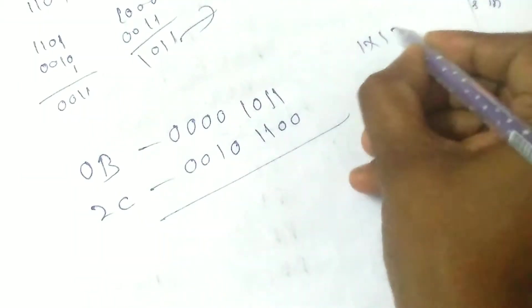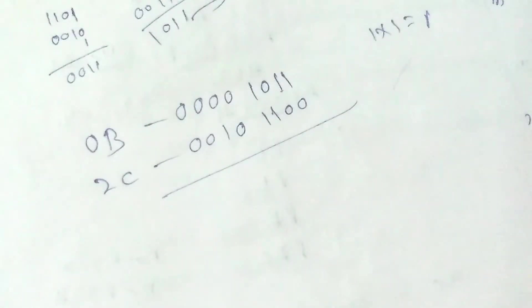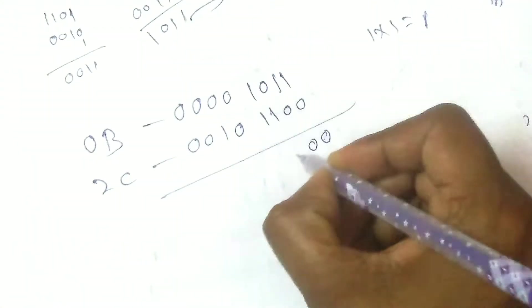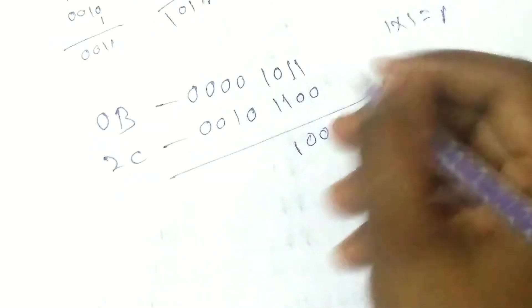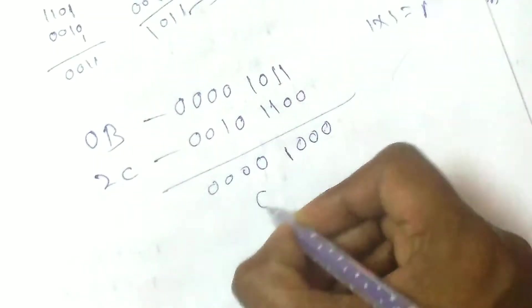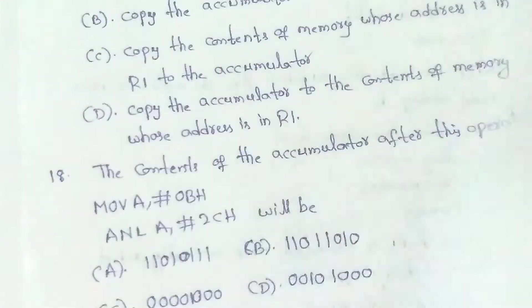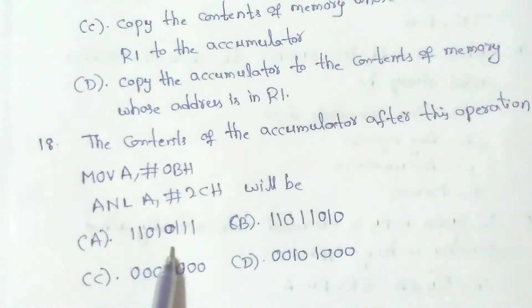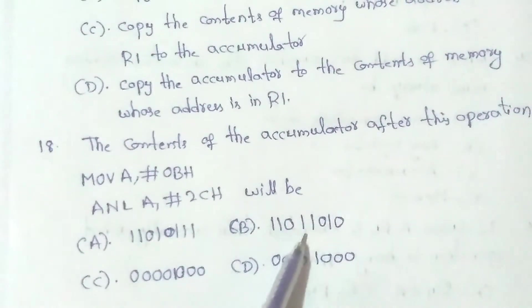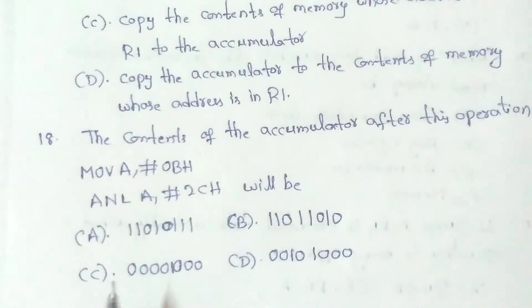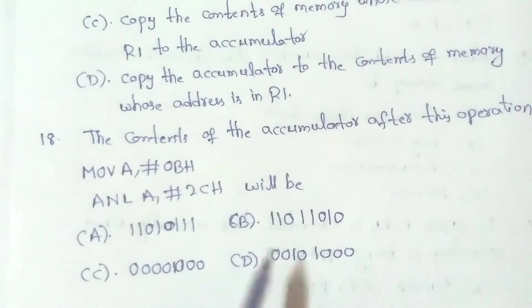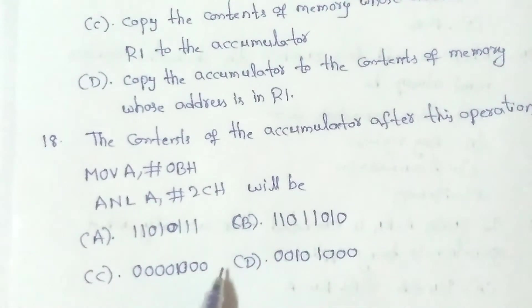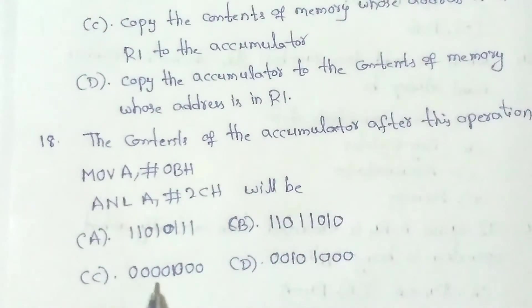Continuing the AND operation: 1 AND 1 = 1; 1 AND 0 = 0; 0 AND 0 = 0; 0 AND 1 = 0; result is 0000 1000. Options: A) 000; B) option 3; C) 008H. The answer is option 3, which corresponds to 08H.